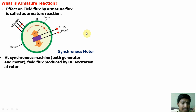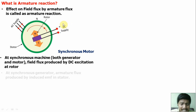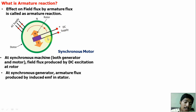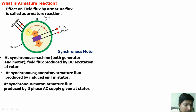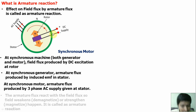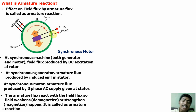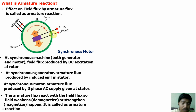In a synchronous machine — both generator and motor — field flux is produced by DC excitation at the rotor side. In a synchronous generator, due to rotor rotation, an EMF is induced in the stator side; due to the induced EMF, armature flux is produced. The armature flux reacts with the field flux so that the resultant flux may be increased or decreased. If increased, it is called magnetization; if decreased, it is called demagnetization.